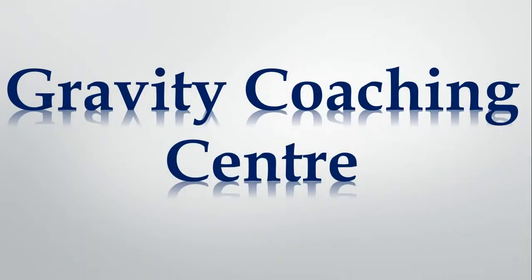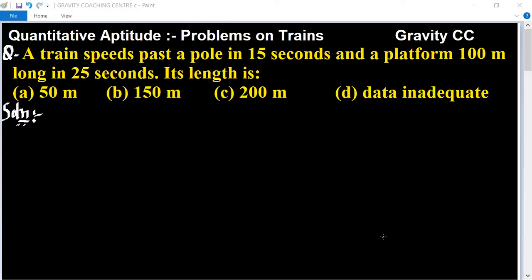Welcome to our channel Gravity Coaching Center. Quantitative Aptitude Chapter: Problems on Trains. A train speeds past a pole in 15 seconds and a platform 100 meters long in 25 seconds. What is the length of the train?